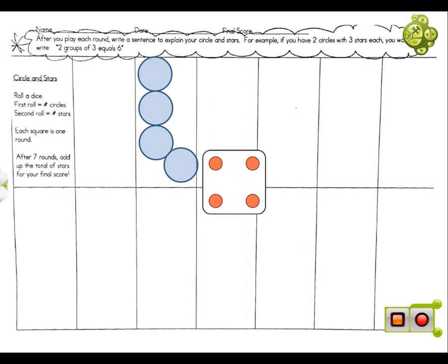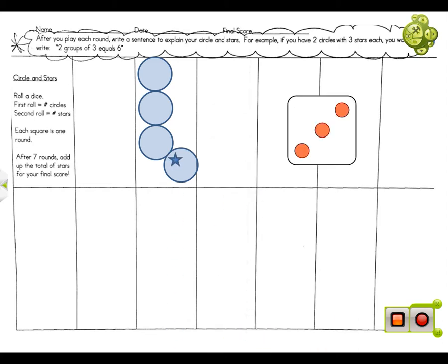Your second roll is for how many stars you're going to have, which is three, so one, two, three. You have to draw three in each circle. That was your second round.